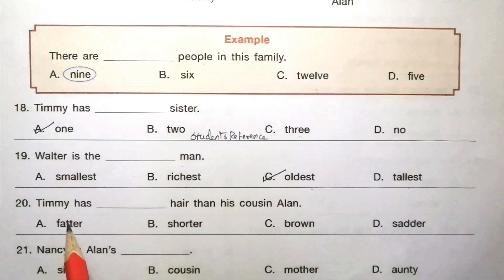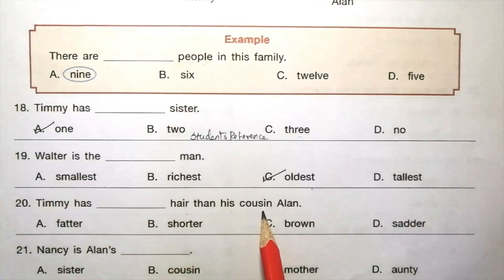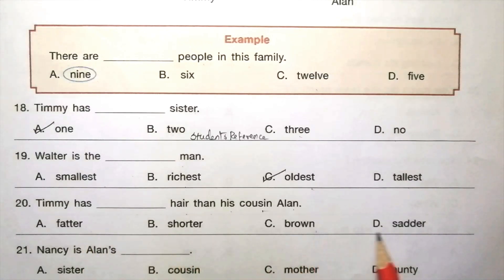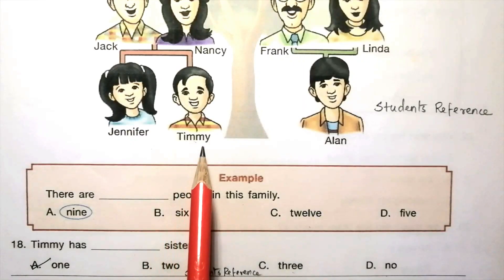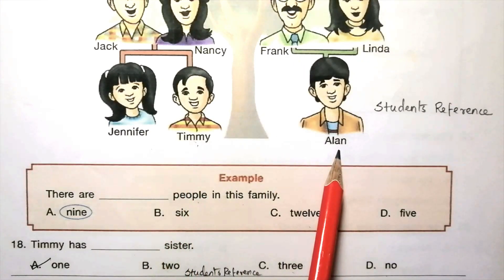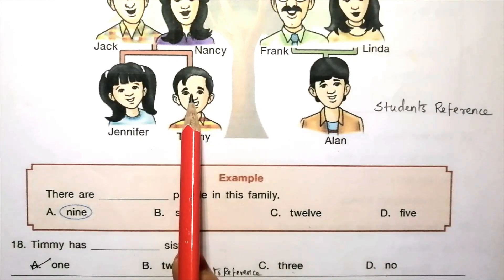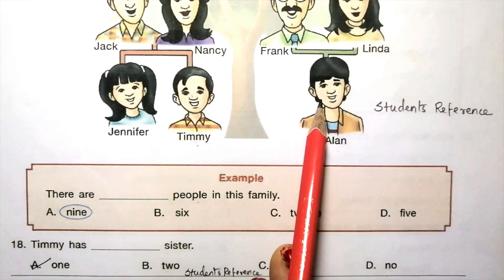Question 20: Timmy has dash hair than his cousin Alan — fatter, shorter, brown, sadder. The answer is B, shorter. Timmy has shorter hair than his cousin Alan. Look at the picture — comparing Timmy and Alan, Timmy has shorter hair than Alan.